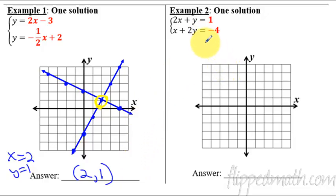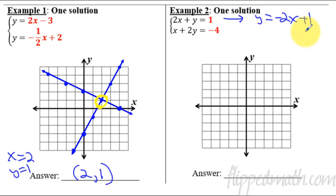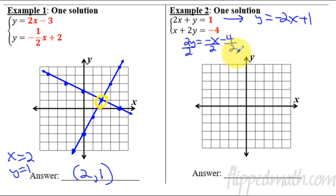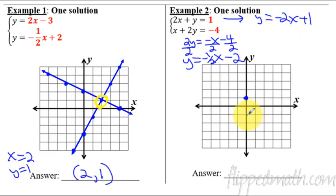Next example, number two: two x plus y equals one. How are we going to graph this? Let's go with standard form here. Subtract the two x from both sides — I'll get y equals negative two x plus one. And then here, if I subtract an x from both sides, I'll get two y equals negative x minus four. Remember when you divide by two, you have to divide every single term by two — it's like it distributes, kind of like multiplication distributes, so does division. So now I have y equals negative one half x minus two. Now I can graph these two things.